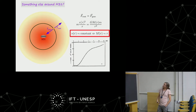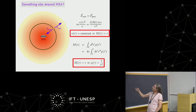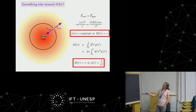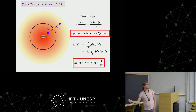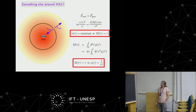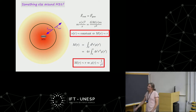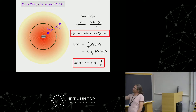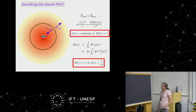They went further: assuming spherical symmetry, since mass equals the integral of density over volume, if the mass grows linearly with distance then the density must decrease as 1/r². From these observations they concluded: either Newton's gravity is wrong, or the Andromeda galaxy is permeated by a substance distributed with density decreasing as 1/r².